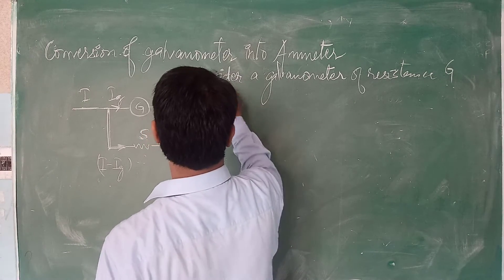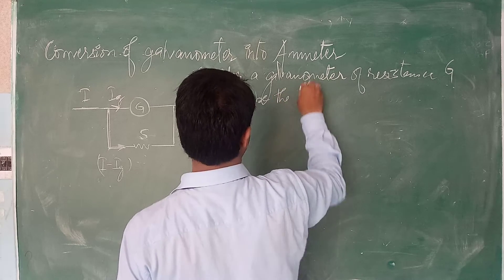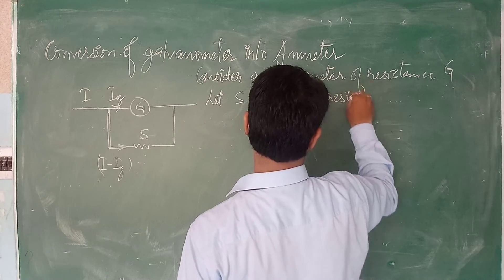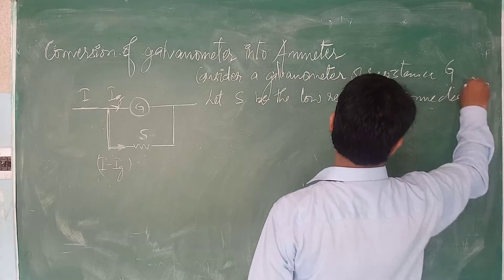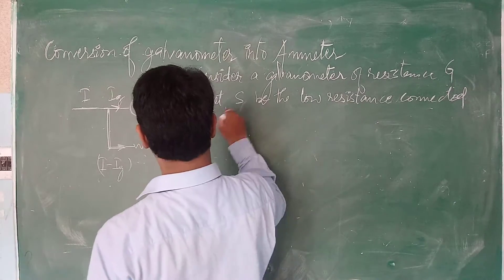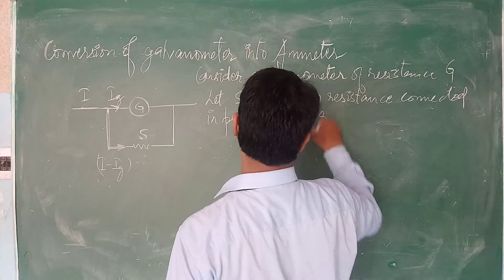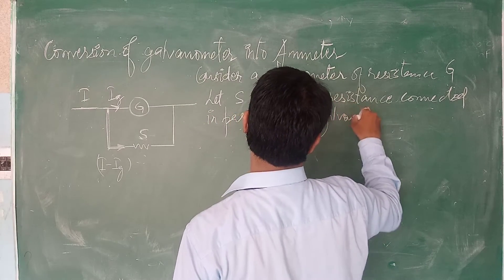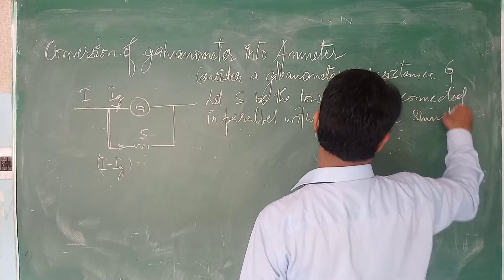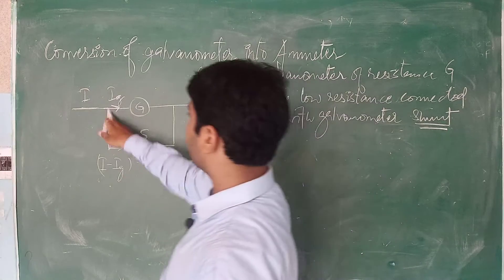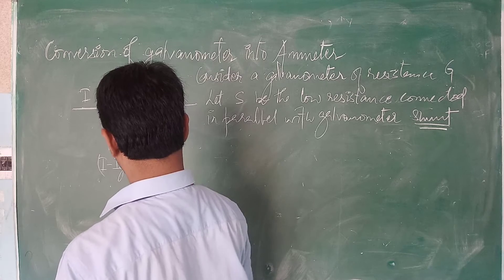Let S be the lower resistance connected in parallel. The galvanometer shunt is also called shunt resistance — we call it shunt. The value of this resistance is very low; it is a low resistance.